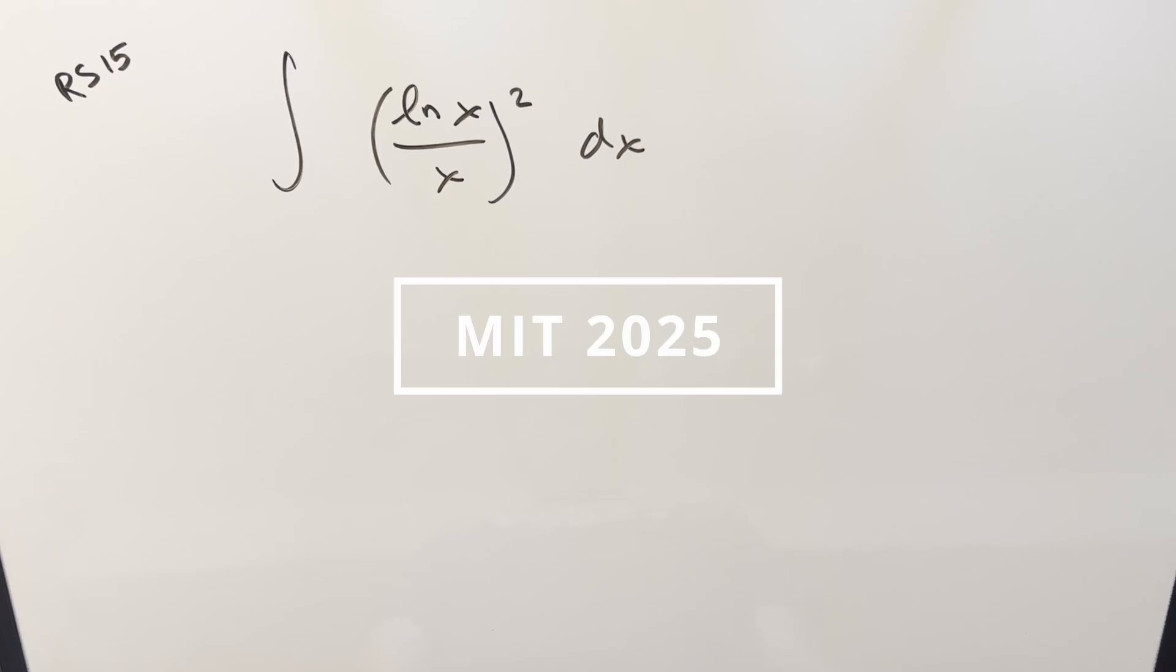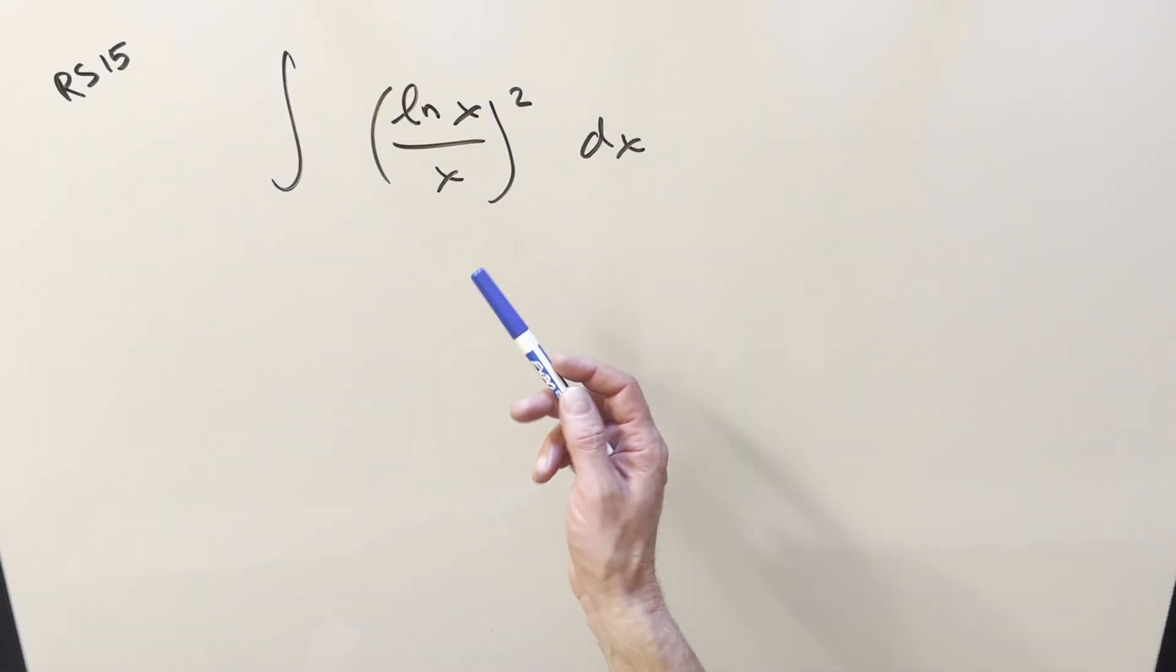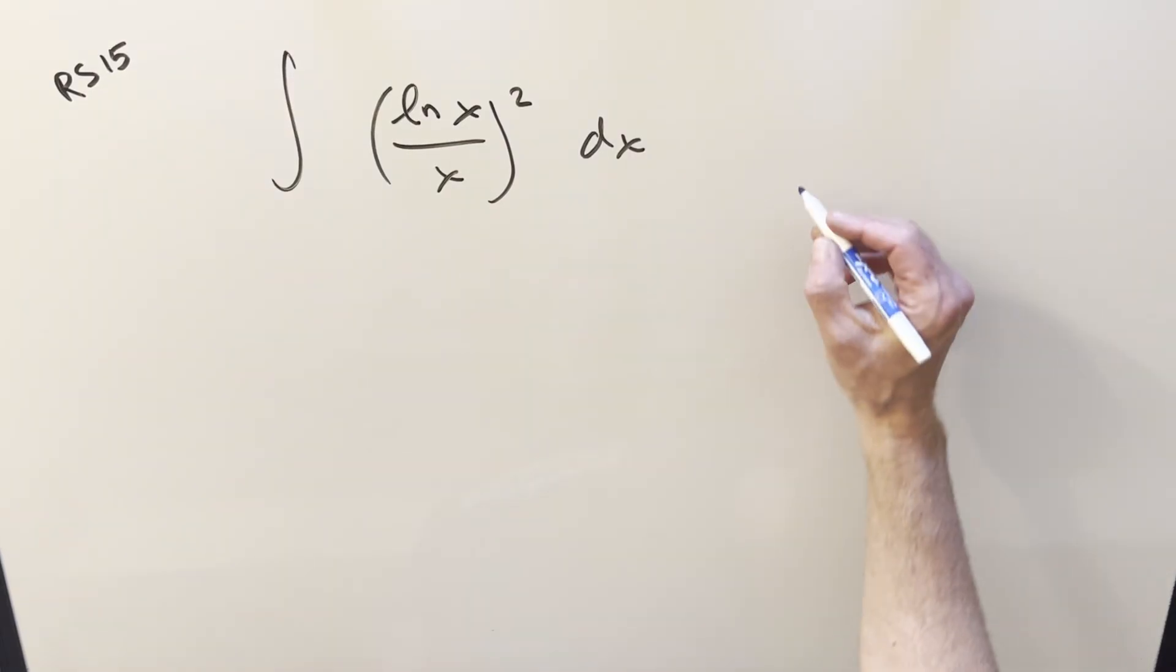We have the integral of ln x over x, all squared, dx. It's kind of interesting because we're used to seeing this without the square, right, with ln x over x.